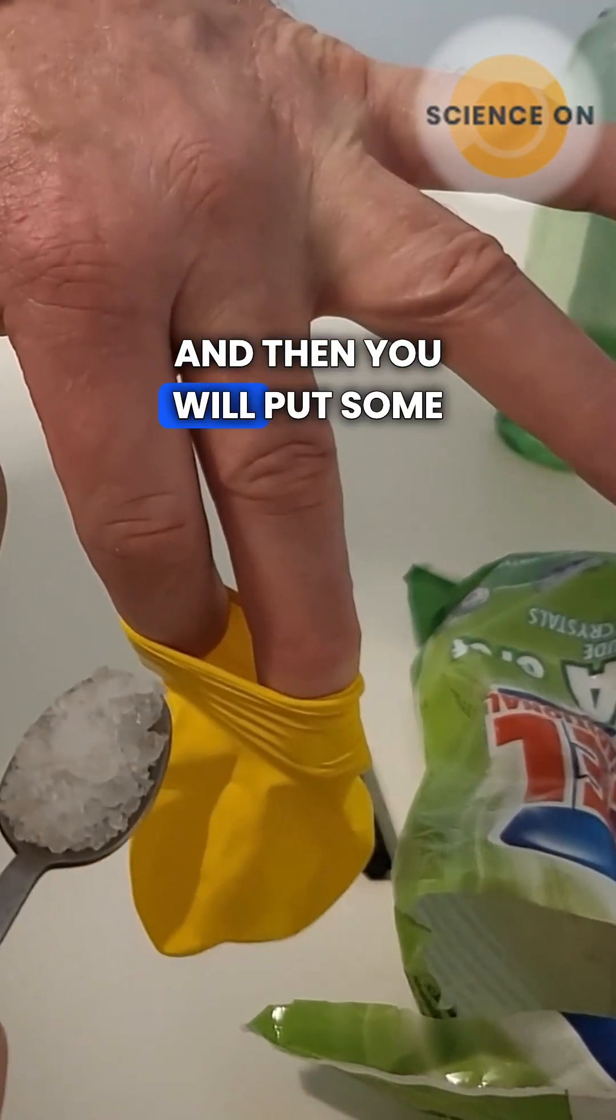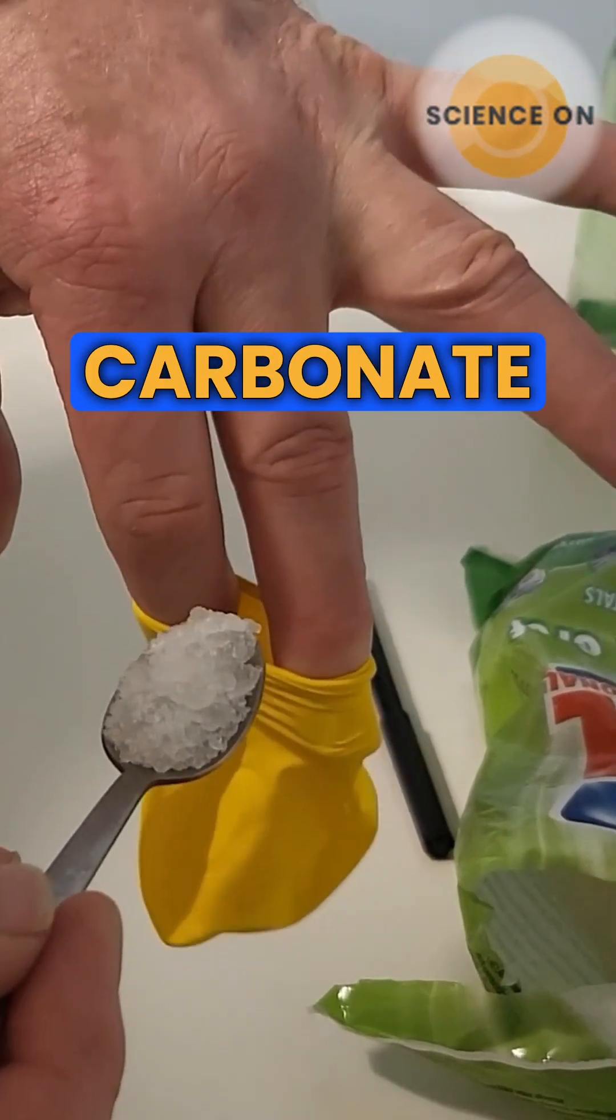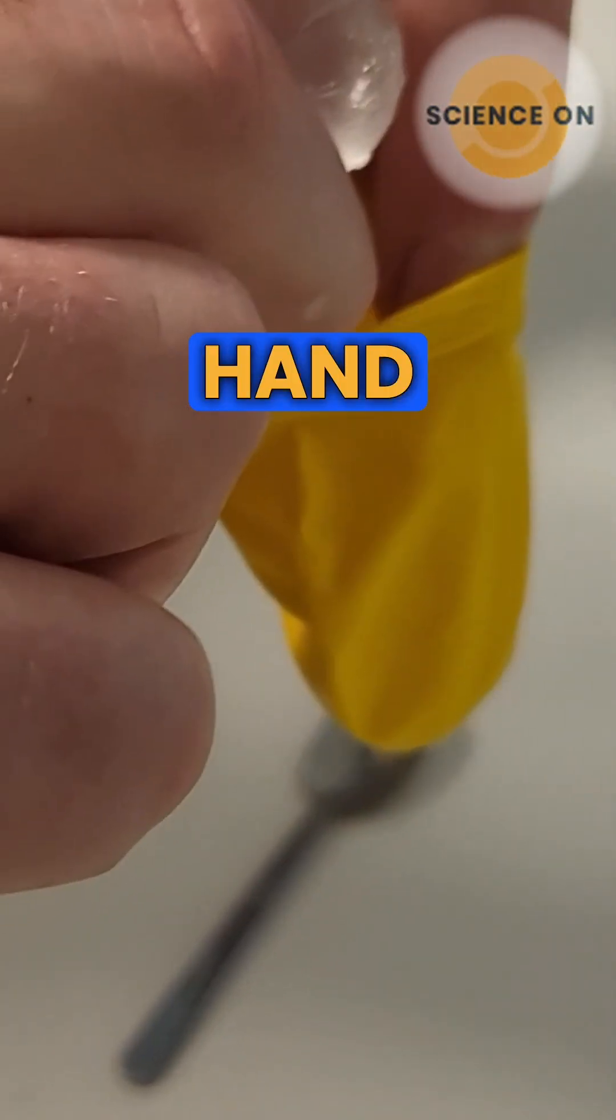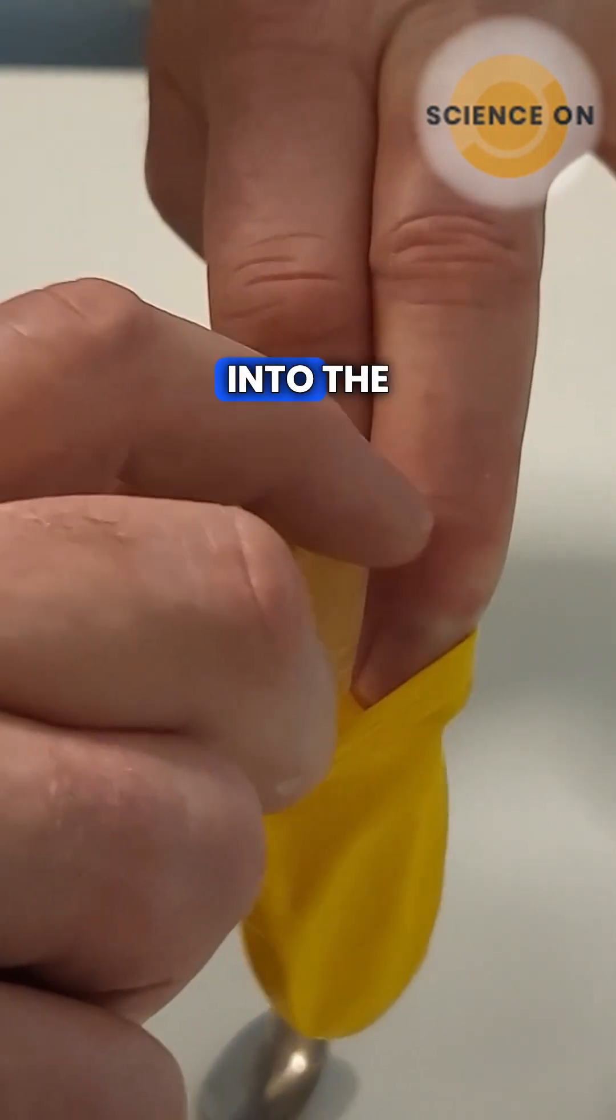Then you will put some sodium carbonate into the balloon, and then you will put the hand glove with vinegar into the balloon. You have to close it.